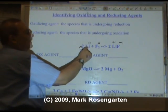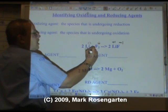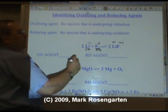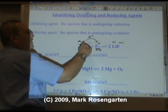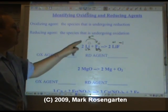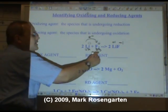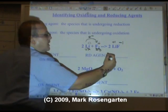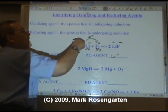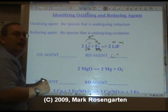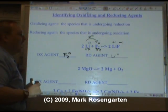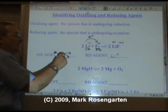In this reaction, lithium is going up in charge and fluorine is going down in charge. This happens because lithium gives up its electrons to fluorine. Fluorine can't be reduced without lithium giving up its electrons — lithium causes fluorine to be reduced, so lithium is the reducing agent. But the lithium wouldn't have given up its electrons if fluorine hadn't been there to take them, so fluorine causes the lithium to be oxidized — therefore it is the oxidizing agent.